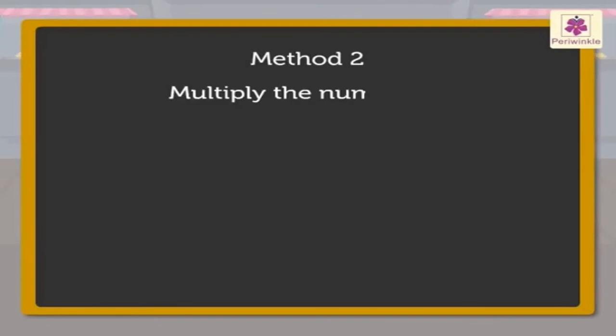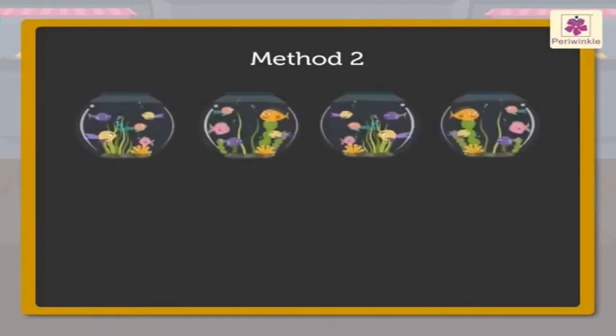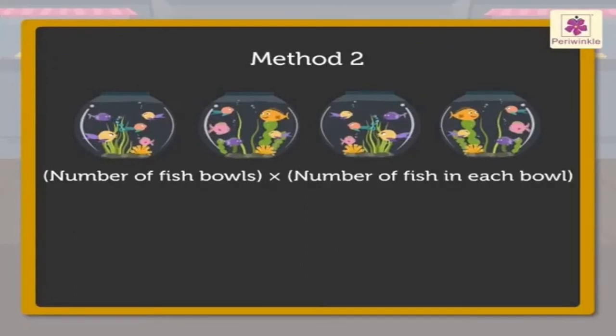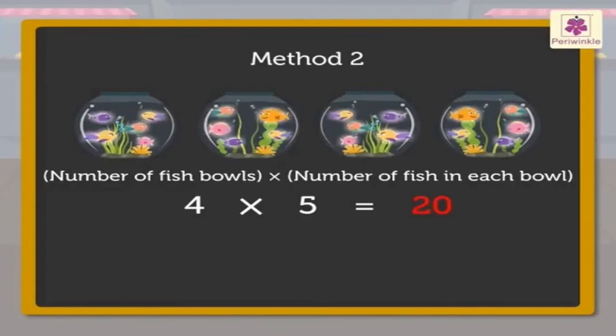Here, we would be multiplying the numbers. Let us see how. There are 4 fish bowls. Each bowl has 5 fish in it. So, here we multiply the number of fish bowls with the number of fish in each bowl. So, 4 times 5 is equal to 20. Thus, there are 20 fish in all.